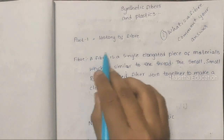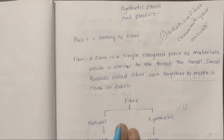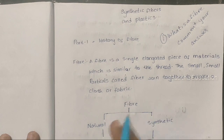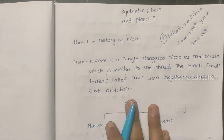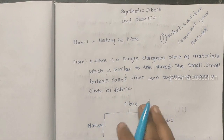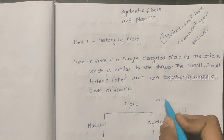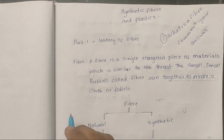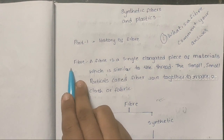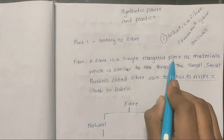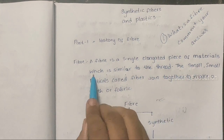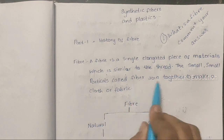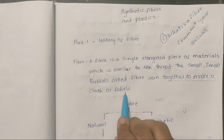History of Fiber. In our daily life, we use so many things like wallets, bags, plastic water bottles, etc. For example, take a cotton and try to tear it — you observe small, small threads. They are called fiber. A fiber is a single and elongated piece of material which is similar to a thread. The small particles of fiber join together to make a cloth.